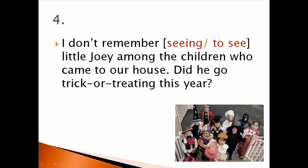Number 4: 'I don't remember [seeing / to see] little Joey among the children who came to our house. Did he go trick-or-treating this year?' Answer: seeing. 'I don't remember seeing' — meaning I don't have the memory of Joey coming to our house. If he did come, I've forgotten about it.